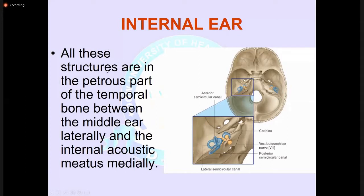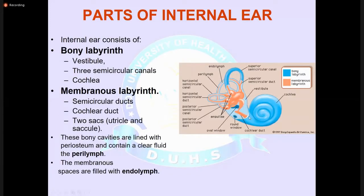The internal ear structures are situated in the petrous part of the temporal bone, between the middle ear and the internal auditory meatus. The parts of the internal ear are the bony labyrinth and the membranous labyrinth. The bony labyrinth contains semicircular canals, cochlea, and vestibule; the membranous labyrinth contains semicircular ducts, cochlear duct, and two sacs — the utricle and saccule. The bony canals are lined with periosteum and contain perilymph; the membranous spaces are filled with endolymph.